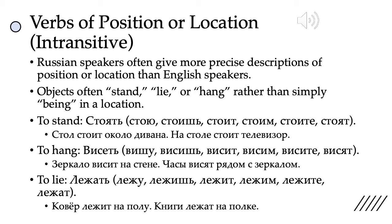Last we have лежать — to lie — which is intransitive and means to be in a horizontal or lying position. This is one of those husher-stem second conjugation verbs: лежу, лежишь, лежит, лежим, лежите, лежат. Note that the eight-letter spelling rule applies — it is лежат with an А rather than Я. Examples: ковёр лежит на полу — the rug is lying on the floor. Книги лежат на полке — the books are lying on the shelf. Books can either lie or stand: if standing vertically, они стоят; if placed horizontally, они лежат.